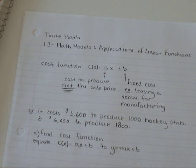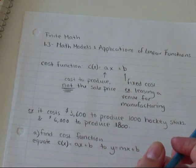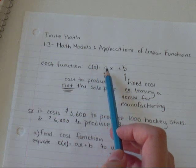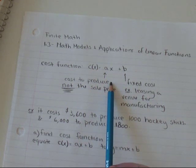Now, the cost function says C(x) equals ax plus b. And what that's telling you is that C(x) equals a is the cost to produce an item.